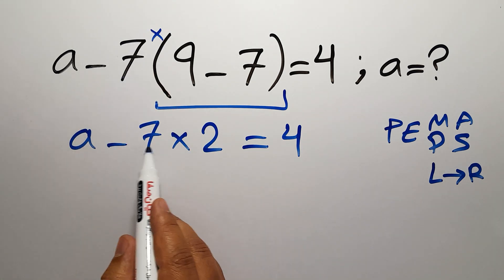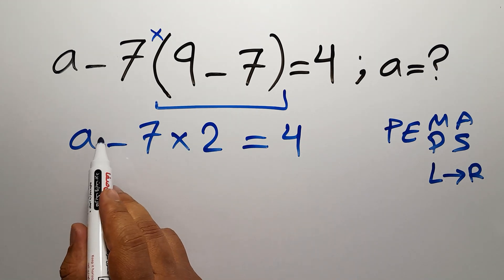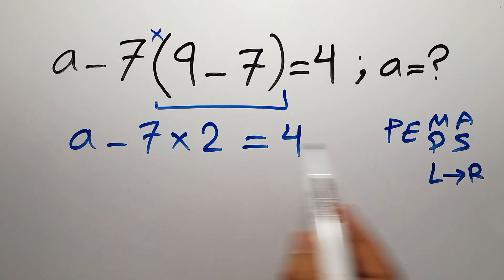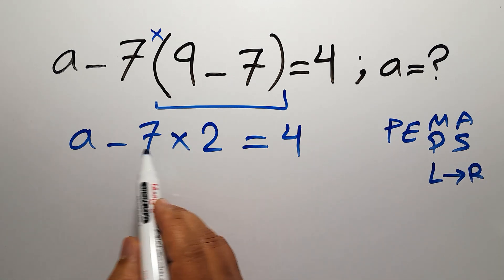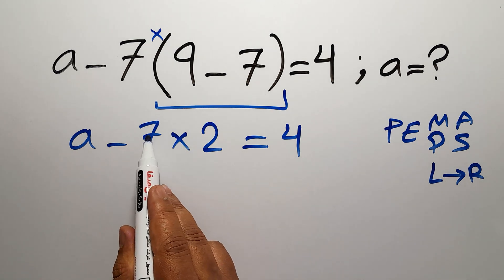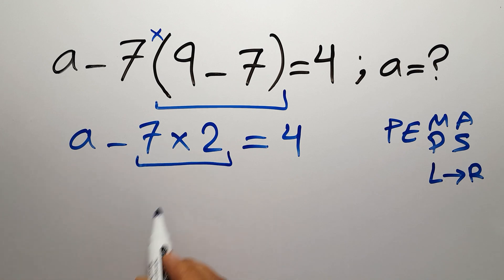A minus 7 times 2 equals 4. Now, we have one subtraction and one multiplication. In PEMDAS, multiplication comes before subtraction. So now we have to do this multiplication. 7 times 2 gives us 14.